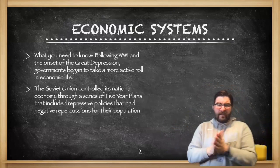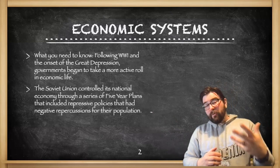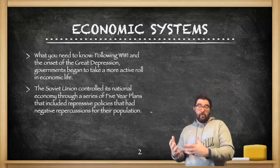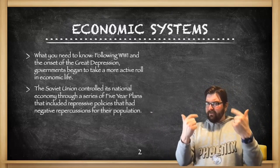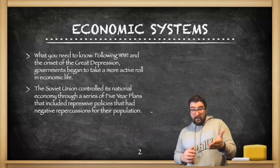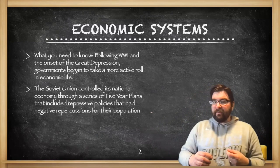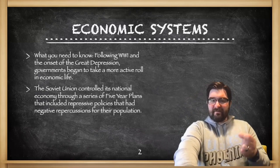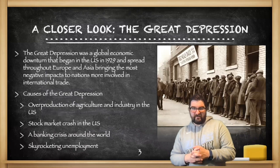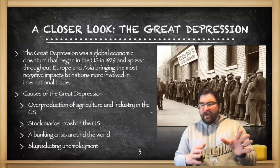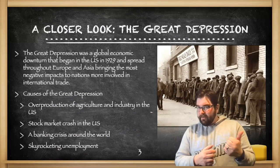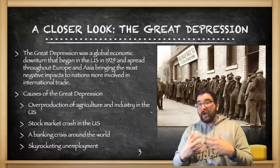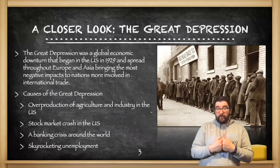First we're going to focus on economic systems. After World War I and the onset of the Great Depression, governments are going to take a more active role in nations' and individuals' economic lives. The Soviet Union is going to control its national economy through a series of five-year plans that include repressive policies with disastrous consequences for Soviet populations. We're going to start with the Great Depression, a global economic downturn that began in the United States in 1929 and spread to Europe and Asia, especially where countries were doing a lot of international trade and loans with each other.